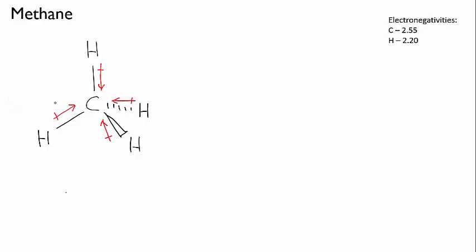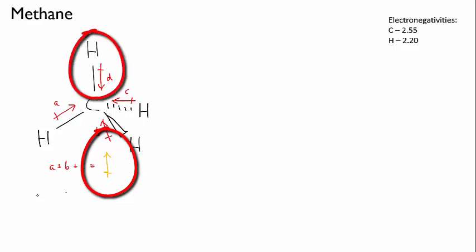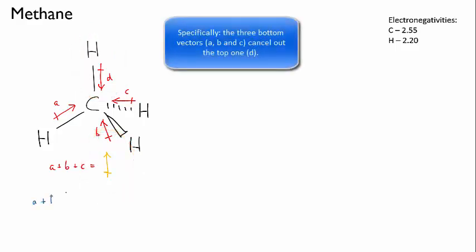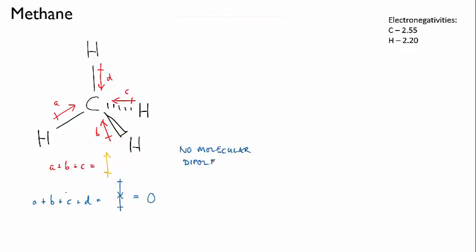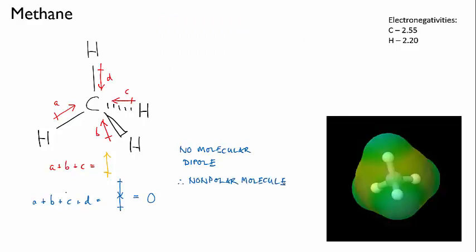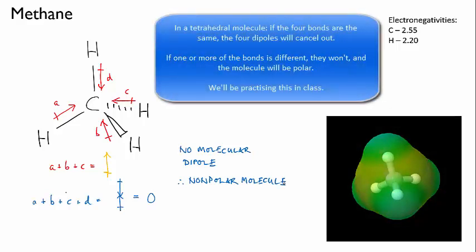Now working out how the dipoles sum in a tetrahedral molecule takes some thinking about. But it's not necessary for this course for you to be able to do it rigorously. If you go through and do it properly, and you really just need basic trigonometry for this, you'll find that the three bottom vectors sum to give a dipole that points upwards, which happens to point in exactly the opposite direction and be exactly equal in magnitude to the top vector, which is pointing down. So overall, these four bond dipoles cancel out, and methane is a non-polar molecule. This is a good shortcut to keep in mind. In a tetrahedral molecule, if the dipoles are all the same magnitude, they will cancel out. If they are not all the same magnitude, then you may need to think more carefully about how they will sum.